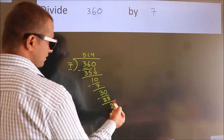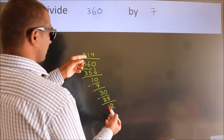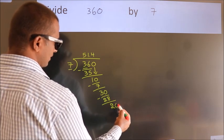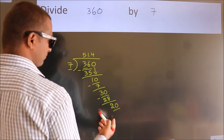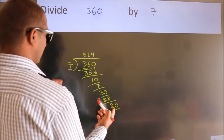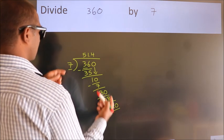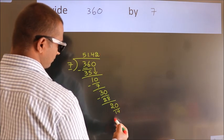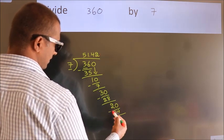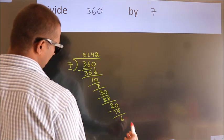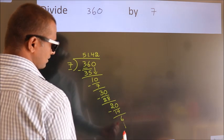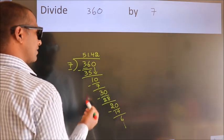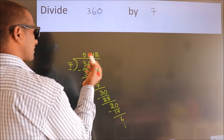After this, we already have the decimal. So, directly take 0. So, 20. A number close to 20 in 7 table is 7 twos 14. Now, we subtract. We get 6. And the division continues. It is enough if we do up to 2 decimal places.